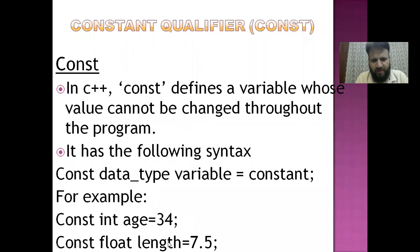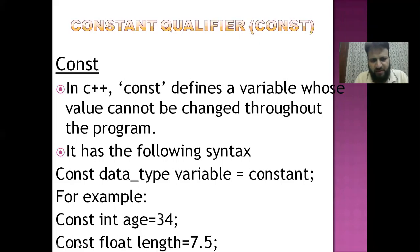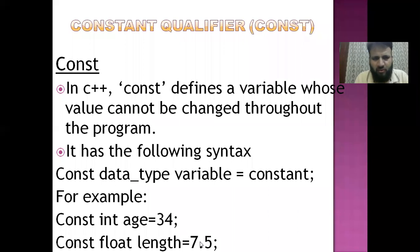Similarly, const float length = 7.5. Here 'length' is the variable name, the data type is float, and the constant value 7.5 will be stored. So we can say that a constant defines a variable whose values cannot be changed throughout the program.